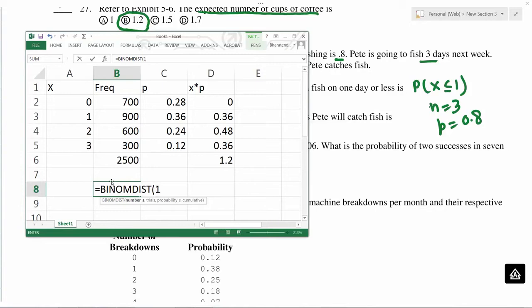So 1, x less than or equal to 1, means I put 1 here. Trials is 3, 0.8, and because it is less than or equal to 1, we say true. So 0.104.